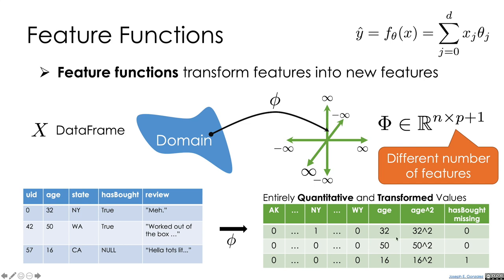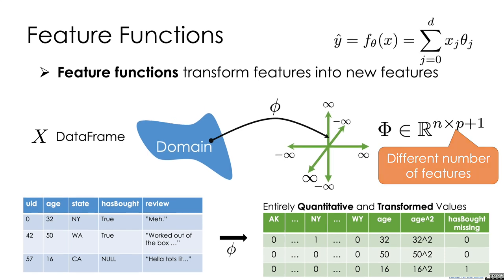Recall in earlier lectures, we talked about taking logs or square roots or exponents of our data to deal with nonlinear relationships. And that is essentially a form of feature engineering.